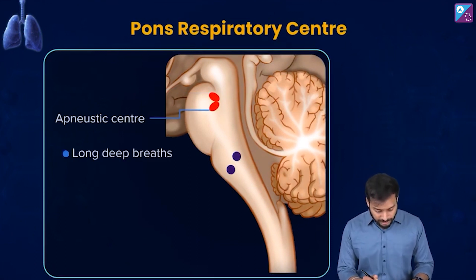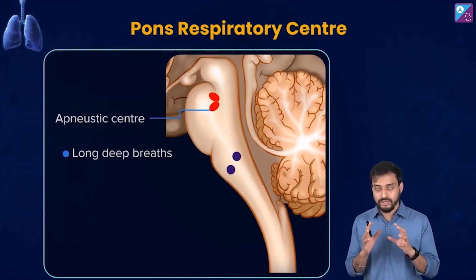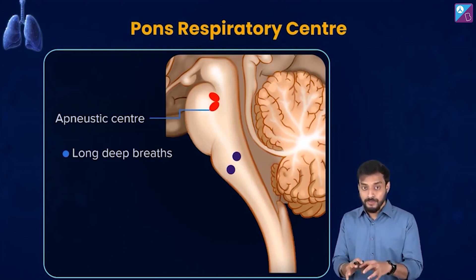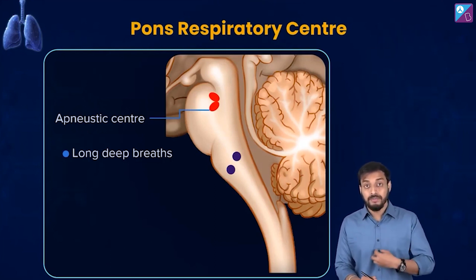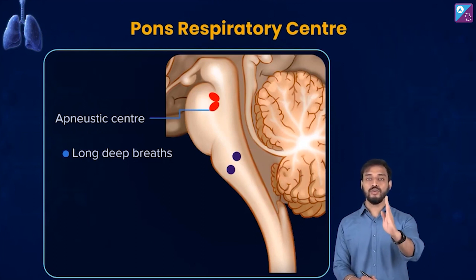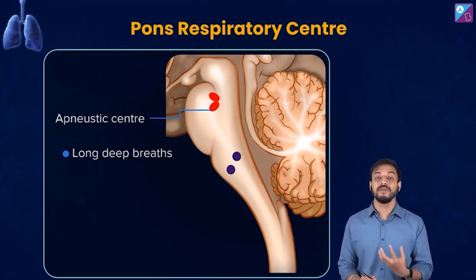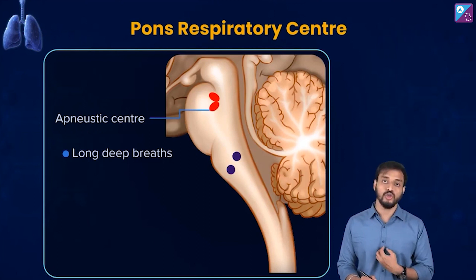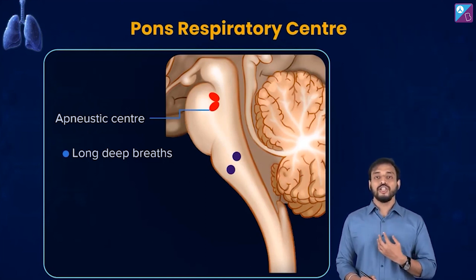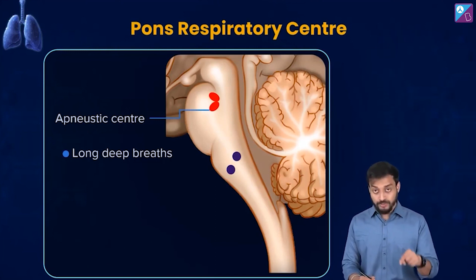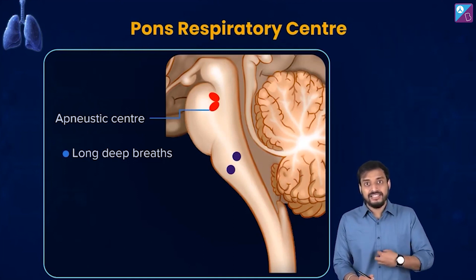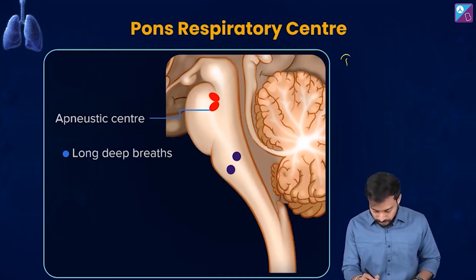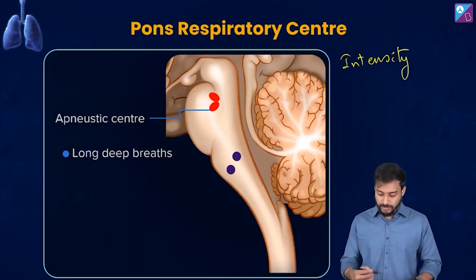Let's talk about the apneustic center first. This center helps in long, deep breaths — it controls the intensity of breathing. When you take a long deep breath, the apneustic center is coming into action, signaling and regulating the intensity of that respiration. Write it down: the apneustic center controls the intensity of breathing.